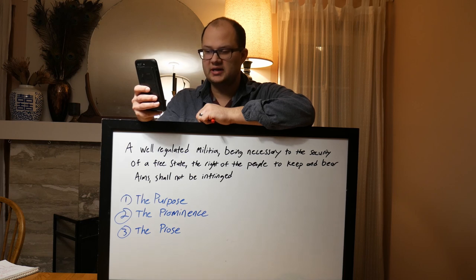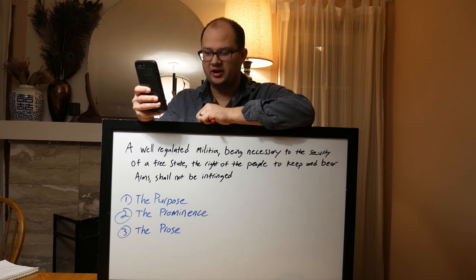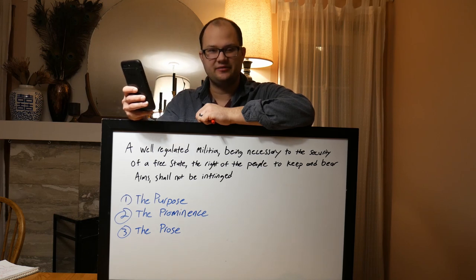Guard with jealous attention the public liberty. Suspect everyone who approaches that jewel. Unfortunately, nothing will preserve it but downright force. Whenever you give up that force, you are ruined. The great object is that every man be armed. Everyone who is able might have a gun. Patrick Henry, Speech to the Virginia Ratifying Convention, June 5th, 1778.